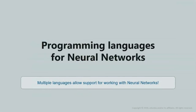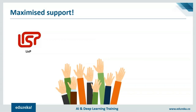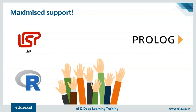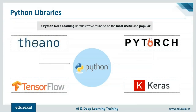Let's check out some of the programming languages for neural networks. Multiple languages support working with neural networks: LISP (List Processor), Prolog, R, Java, and everyone's personal favorite — Python. For this tutorial, let's consider Python and check out what Python has to offer. In my opinion, the four main deep learning libraries that are most popular and useful are Theano, TensorFlow, Keras, and PyTorch. In this tutorial, we'll be focusing on PyTorch.